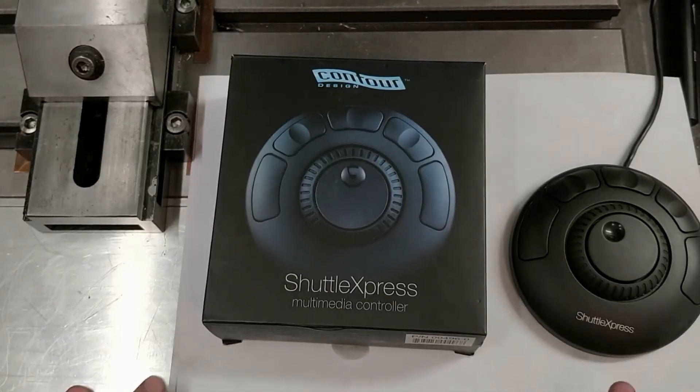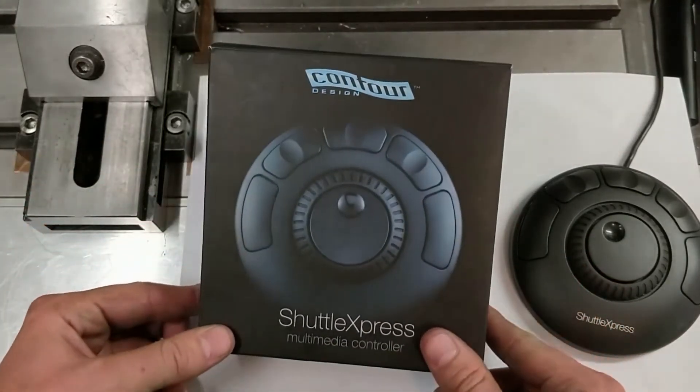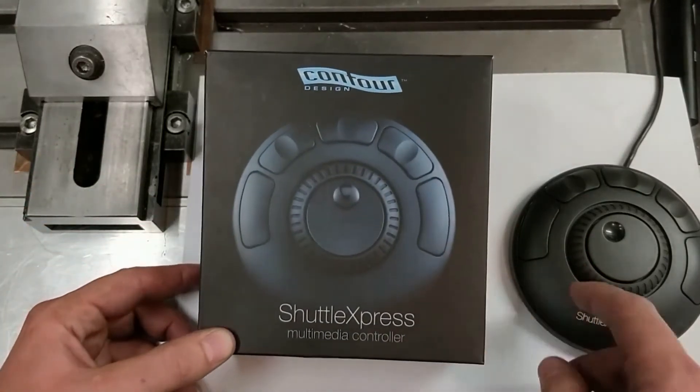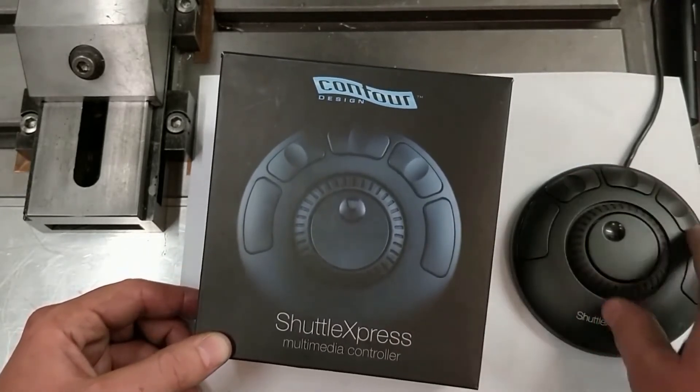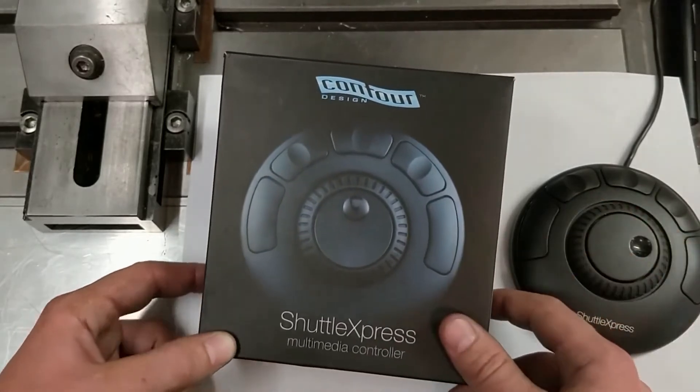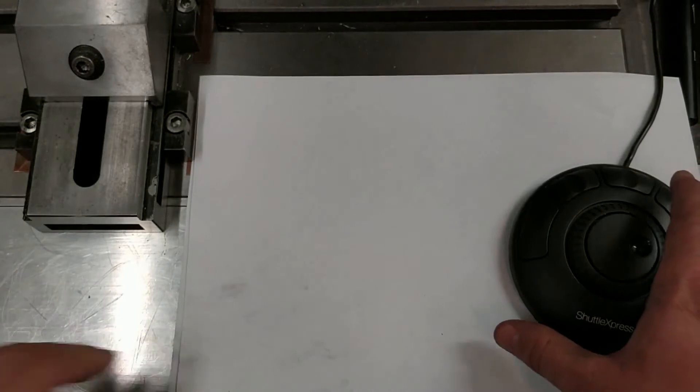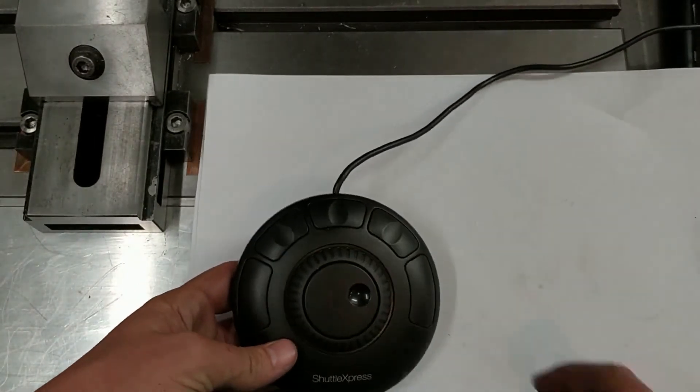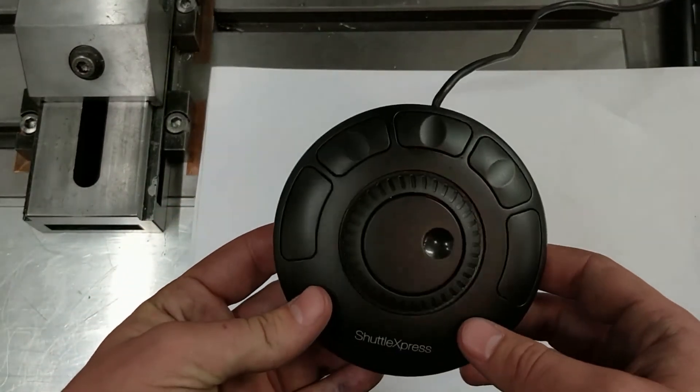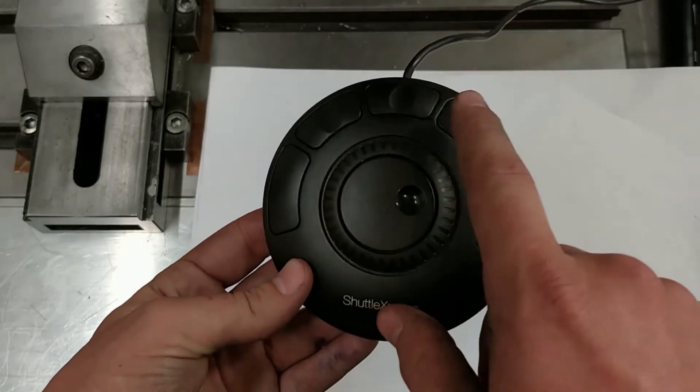To use it, there's a HAL module that we can just load and freely configure each of these five buttons and the inner and outer wheel. So let's look at the device. There are five buttons: one, two, three, four, five.